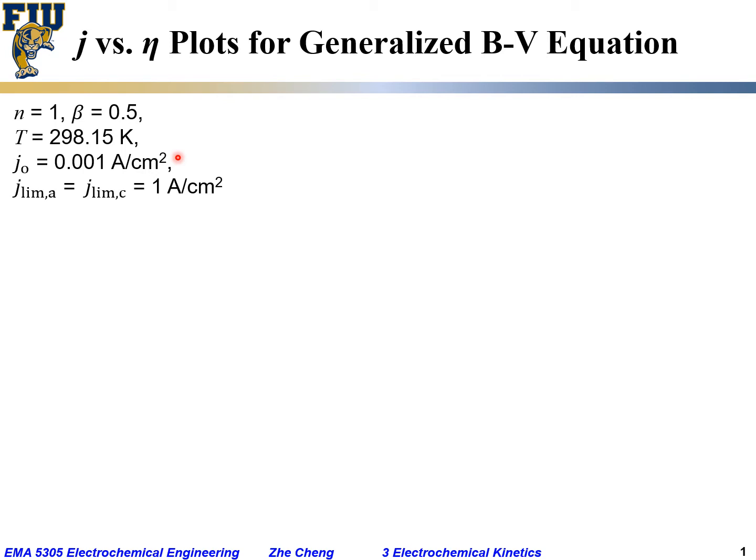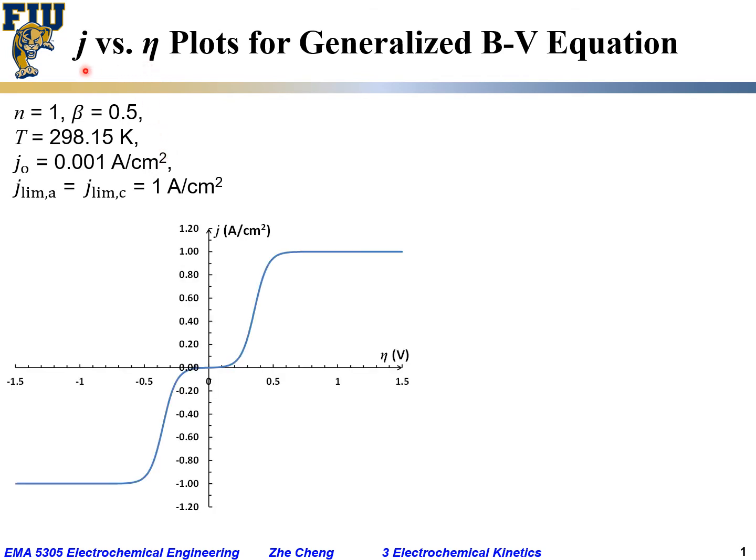And then if we plug these numbers into Butler-Volmer equation, and for different overpotential value, we will get a different current density value. And this is what we have. The horizontal axis would be eta for overpotential for that electrode or half-cell reaction. J would be for the net current density.